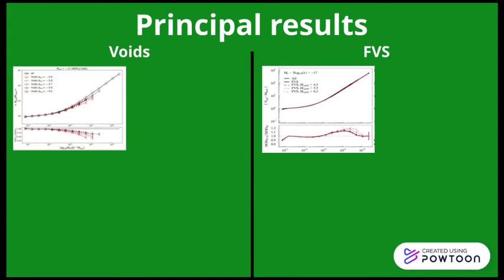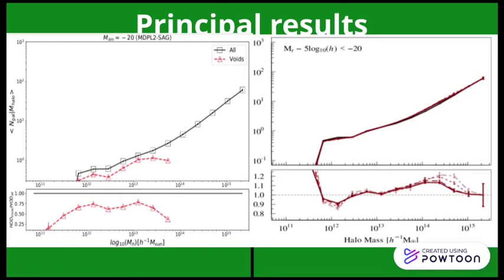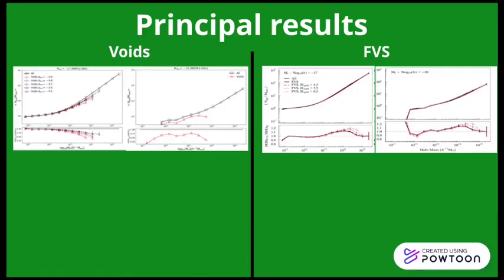In both cases, the result is present for different magnitude thresholds, including galaxies with R absolute magnitude brighter than minus 20.